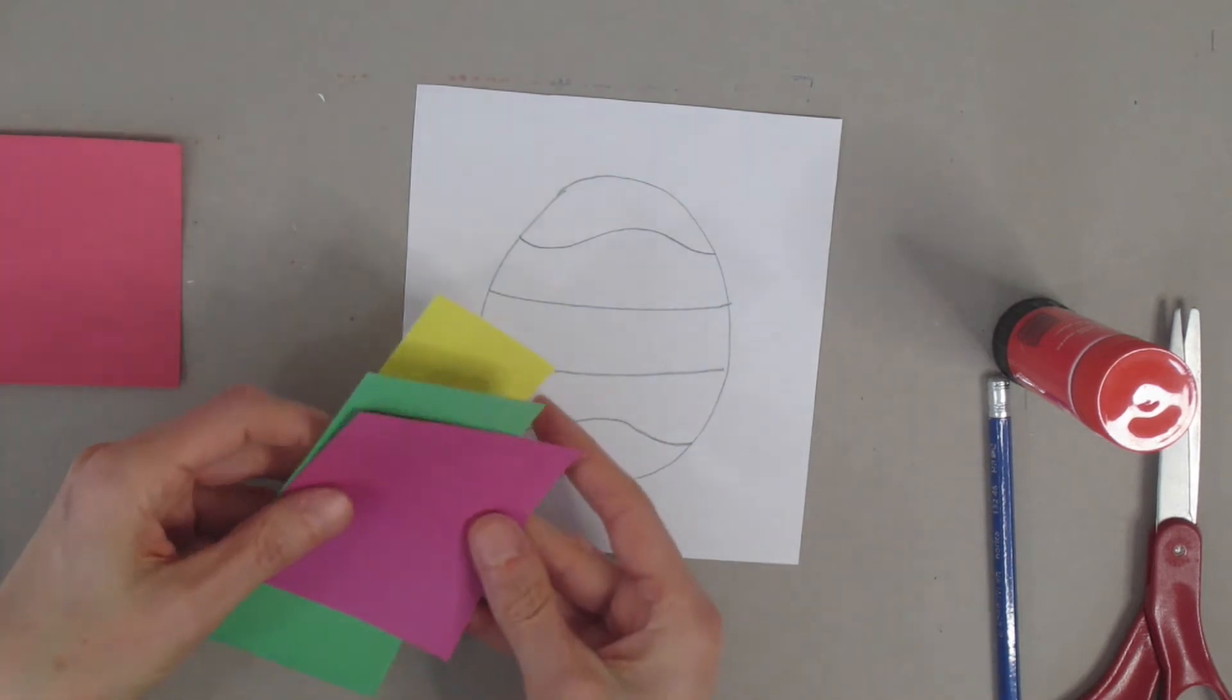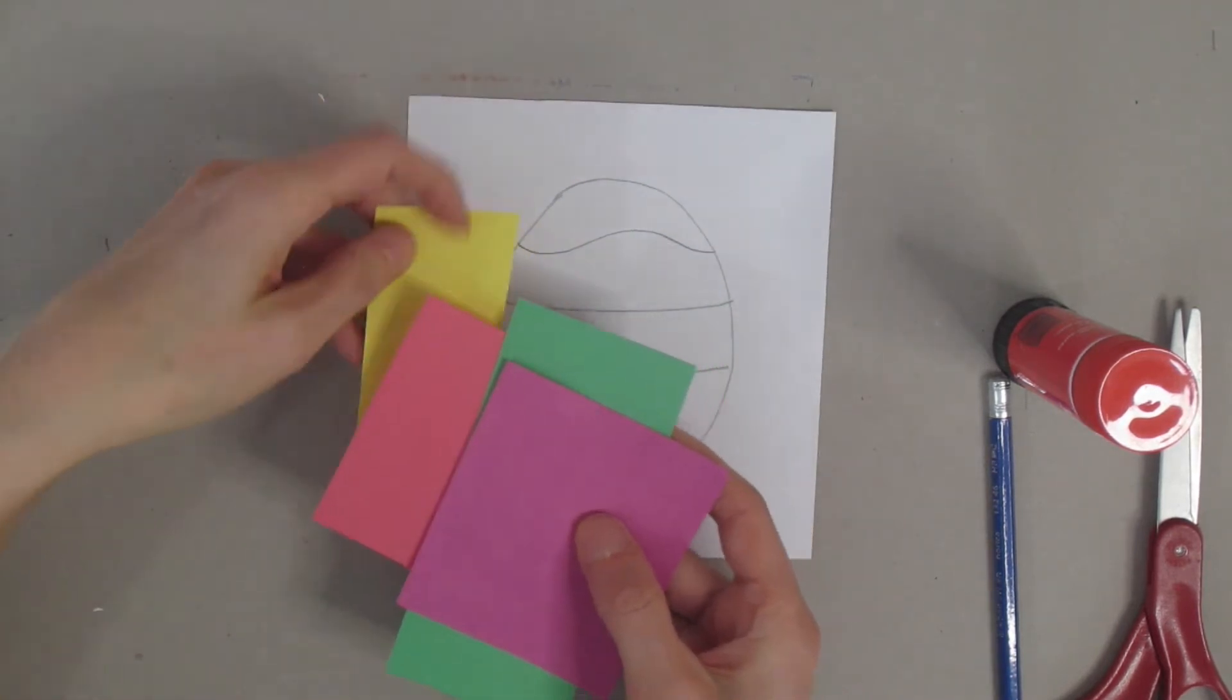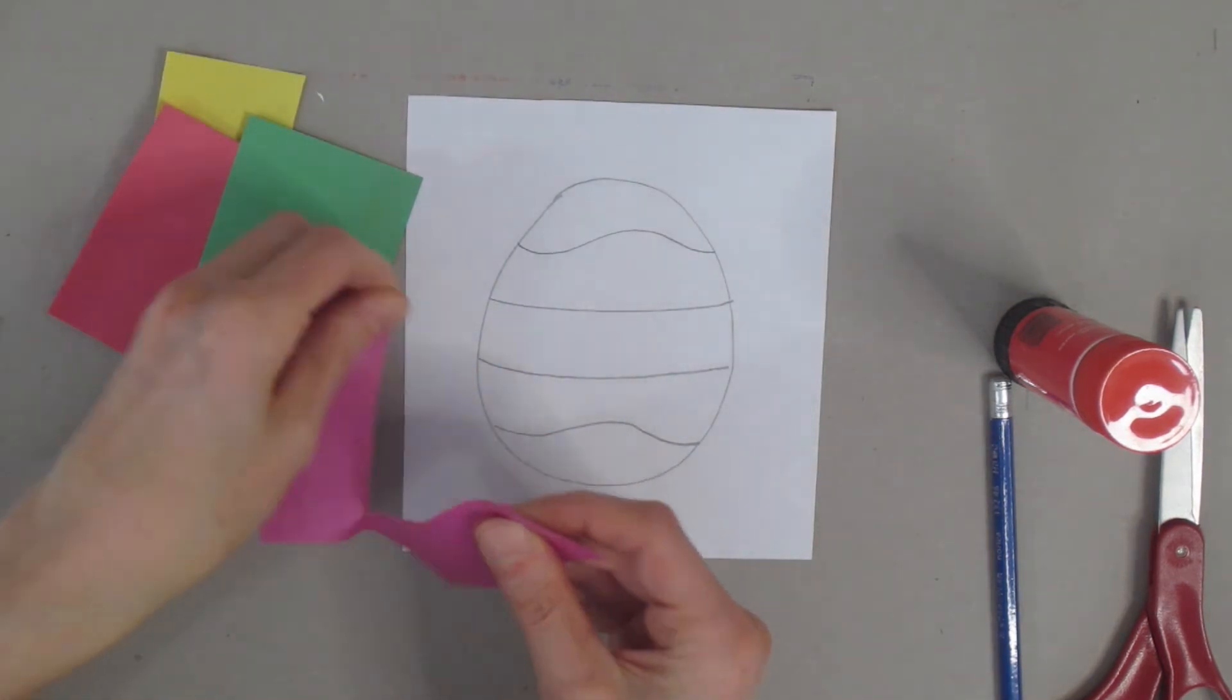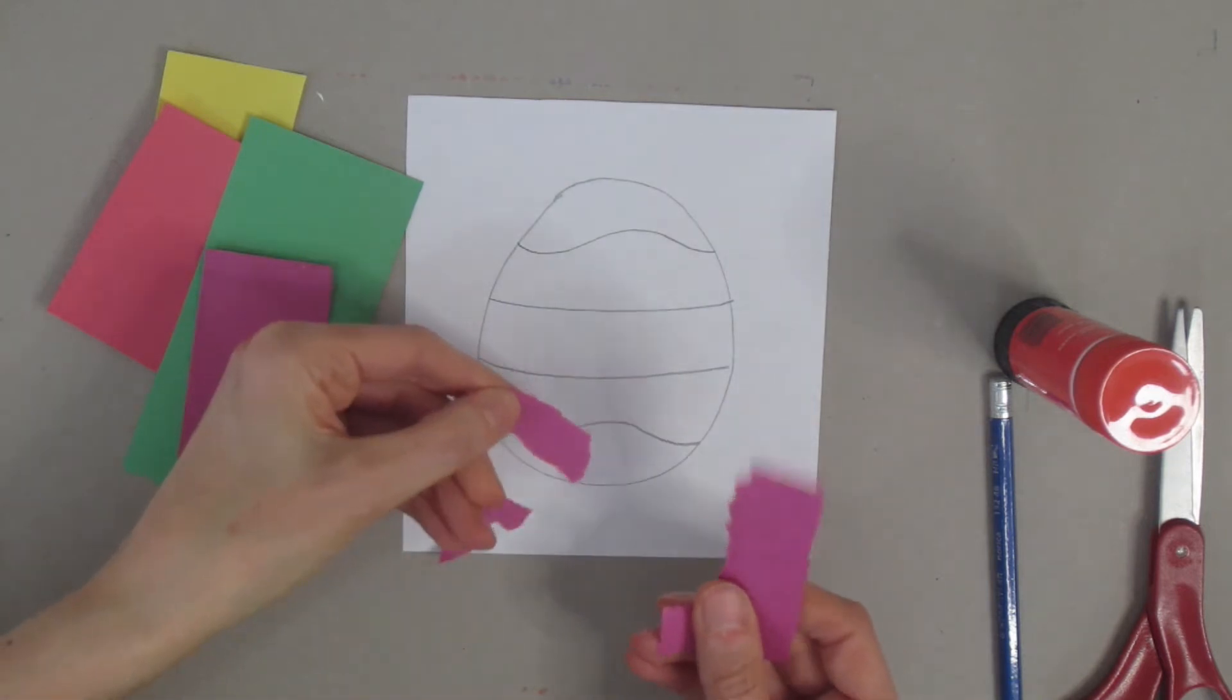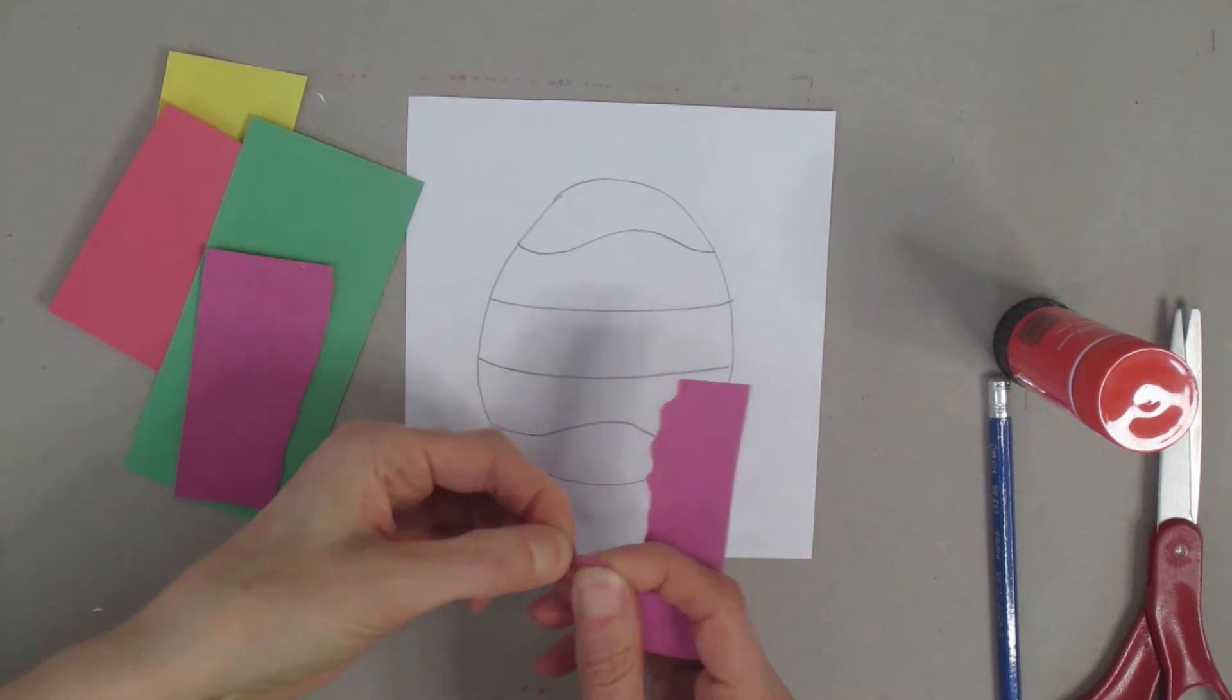Now we're going to take our paper colors. I have a whole bunch of paper colors - you get to decide what you'd like to use. I'm going to start with this color and all I'm going to do is tear my paper, rip it apart into tiny little pieces. You don't want your pieces to be too big and you don't want them to be too small.